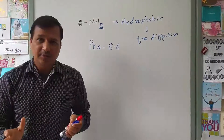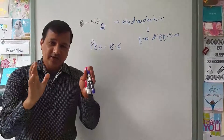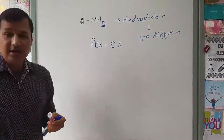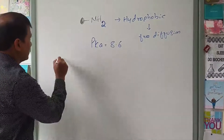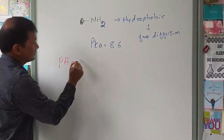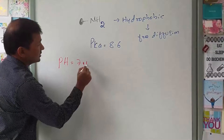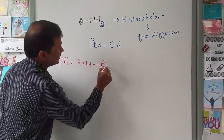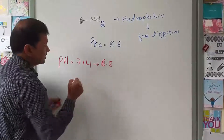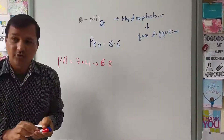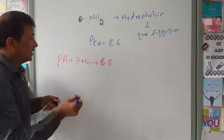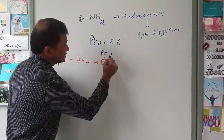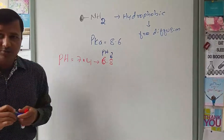Now let us see the pH of that particular area where the injection has been given. The question states that the pH has changed from 7.4 to 6.8, so our pH here is 6.8 — we are dealing with a pH of 6.8.